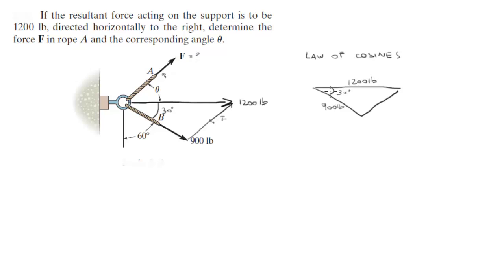You always want to use the law of cosines when you have two sides and the angle between them and you're trying to find the third side. The law of cosines says that c squared is equal to a squared plus b squared minus 2ab cosine of the angle between them.